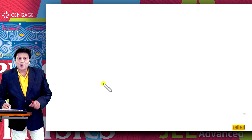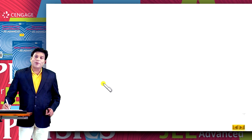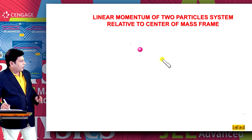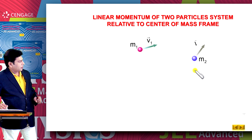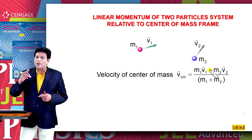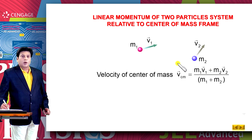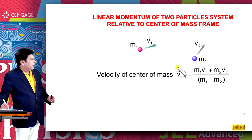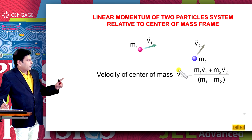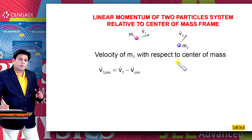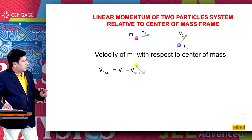Let us calculate the linear momentum of a two-particle system relative to the center of mass frame. Let the two particles m1 and m2 move with velocities v1 and v2. We can easily write the velocity of the center of mass as v_cm = (m1·v1 + m2·v2) / (m1 + m2). Finding the velocity of particle 1 with respect to the center of mass, we write v1_cm = v1 − v_cm, and we know this equals (m2·(v1 − v2)) / (m1 + m2).